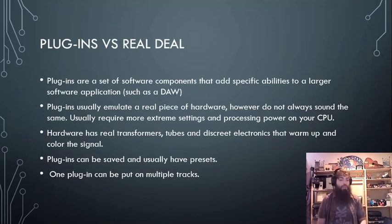Whereas plugins, you can just save your session. It saves all your plugin information and details. And of course, one plugin can be put on multiple tracks. So you buy one instance of a compressor for $29, you can put that thing on as many tracks as you can until you run out of processing power.